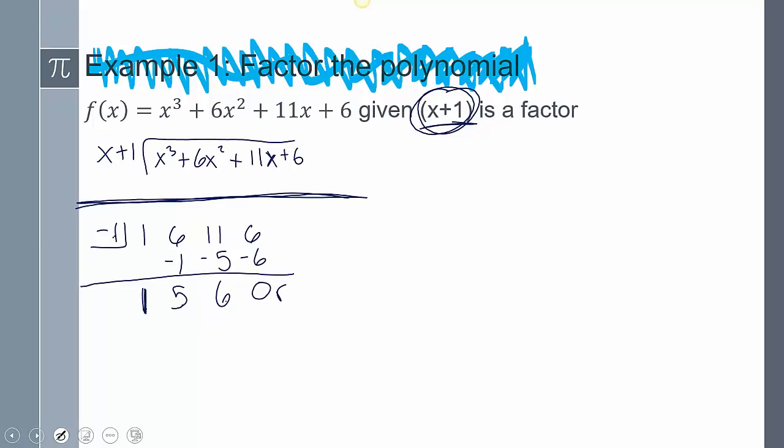So what this means, remember 0, so that's my remainder, constant x, x squared. So right now I have x plus 1 and I have x squared plus 5x plus 6. That's what I have so far. I factored it.